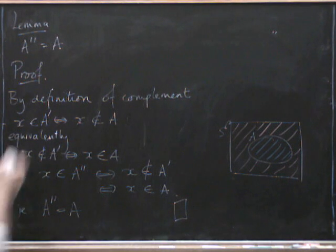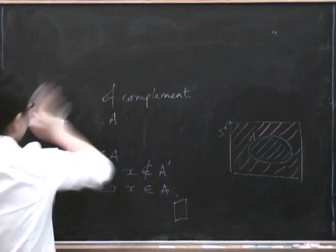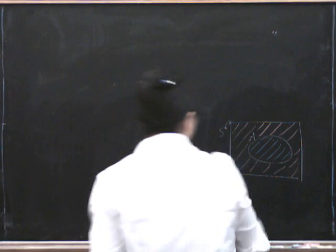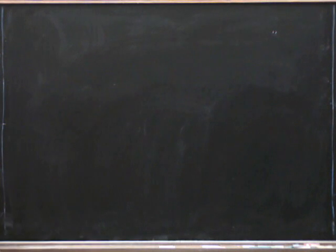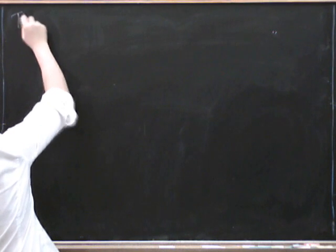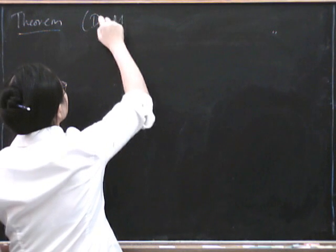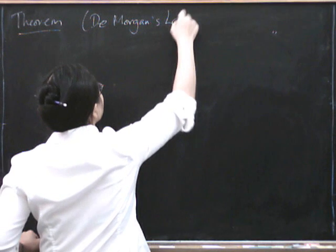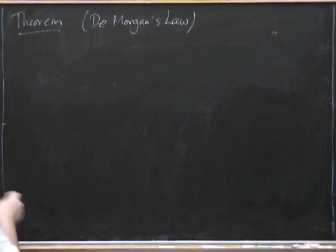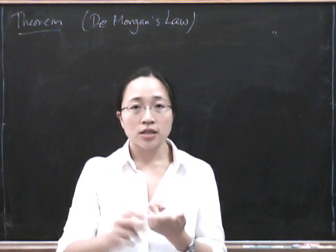Here's another one that is a bit more interesting and a little bit bigger, and it's so important that it actually has a name — this is called De Morgan's Law. It's important enough that it's a theorem, and it has two parts to it. It's all about the interaction between intersection, union, and complement.